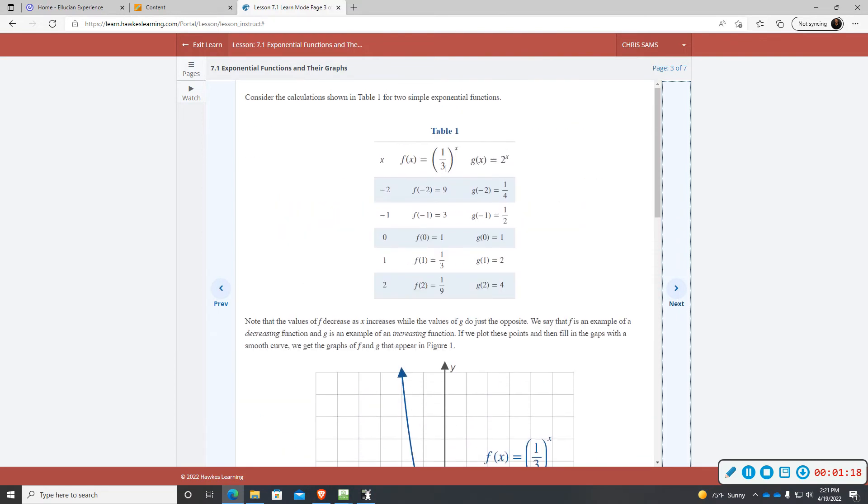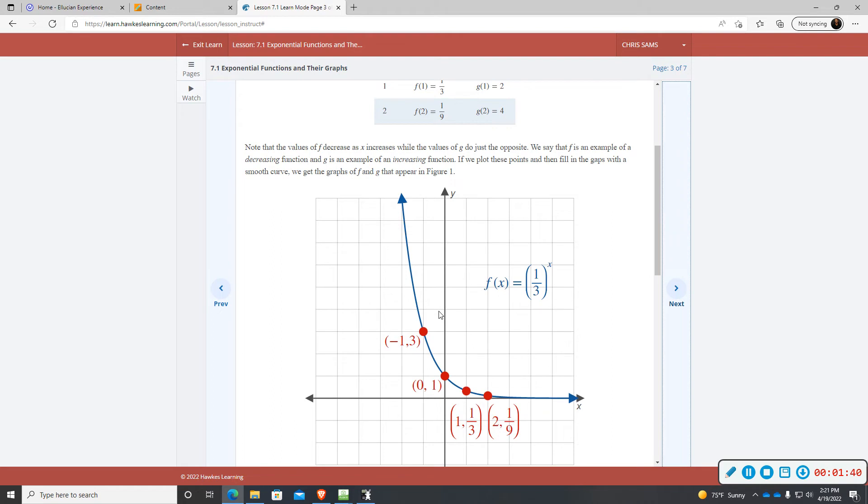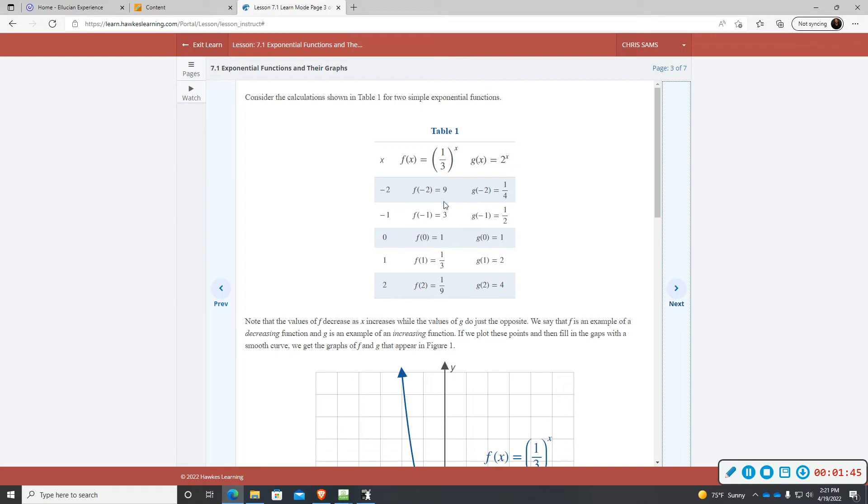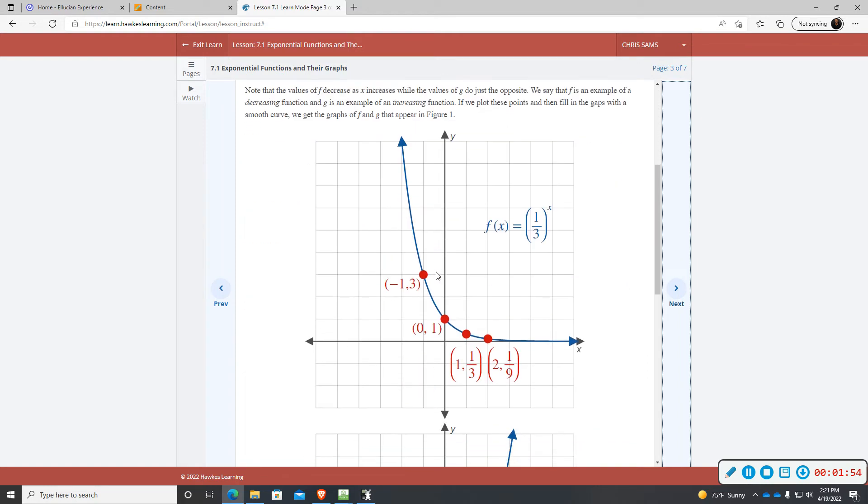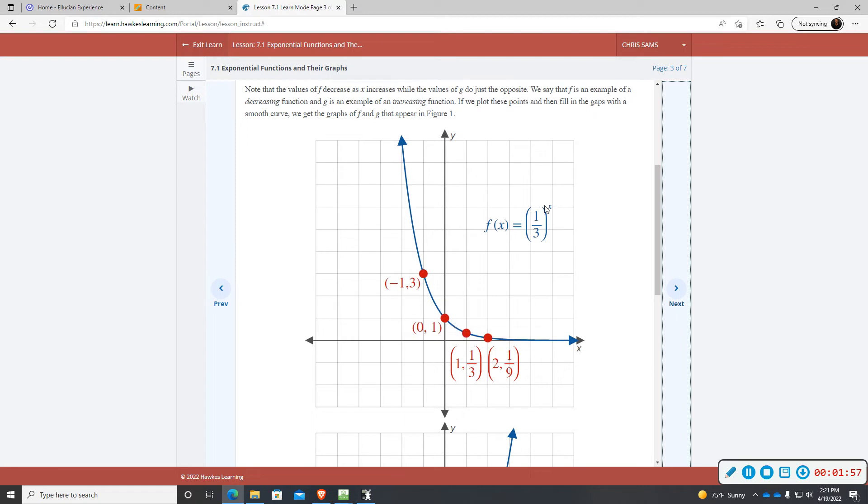All exponential functions that do not have any transformation, these two examples we're seeing here, the first one is one-third to the x power. This number is less than one. It's going to be exponential decay, decreasing. This graph is going down from left to right. But I want you to notice some common properties. Both of those will go through that ordered pair zero, one. If there are no transformations, your graph will go through the ordered pair zero, one, always. That's because if you raise anything to the zero power, it is one.